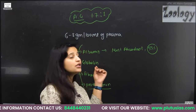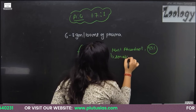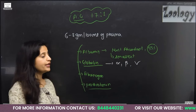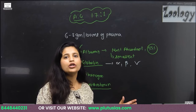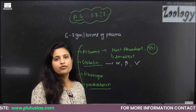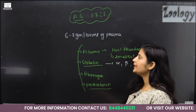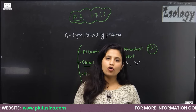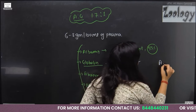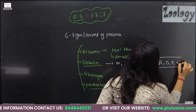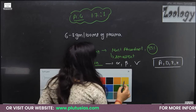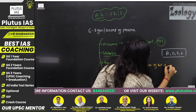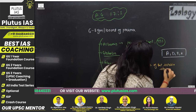Albumin is the smallest protein. Globulin has three types: alpha globulin, beta globulin, and gamma globulin. Alpha and beta globulin are responsible for the transport of fat-soluble vitamins. The fat-soluble vitamins in our body are vitamin A, vitamin D, vitamin E, and vitamin K, while vitamin B and C are water-soluble vitamins.